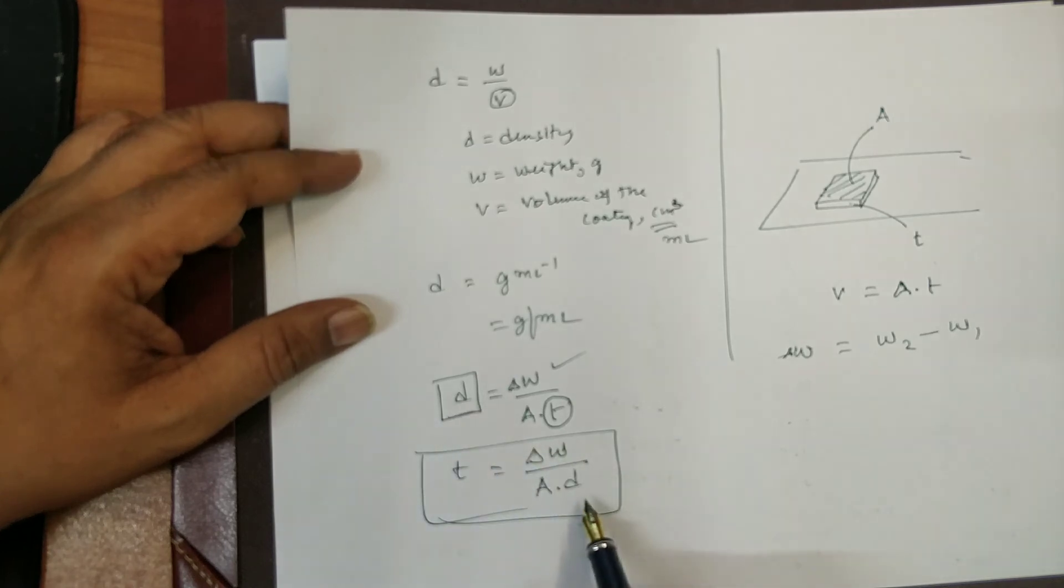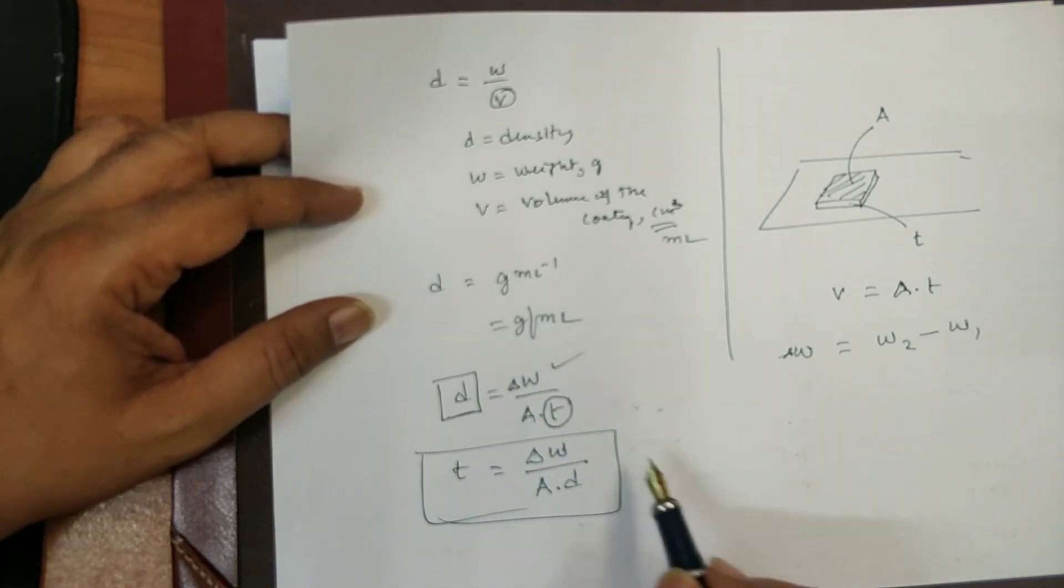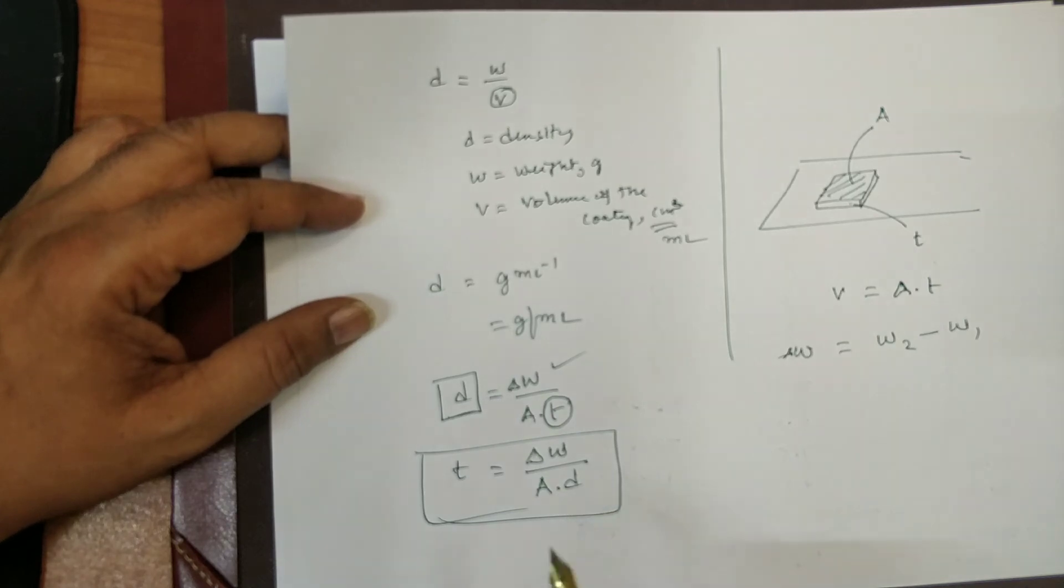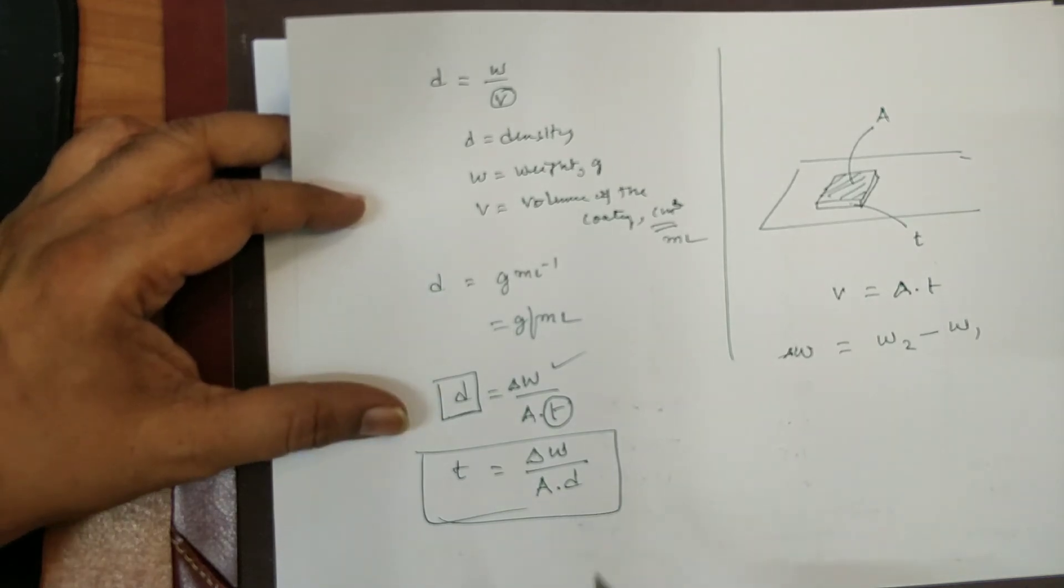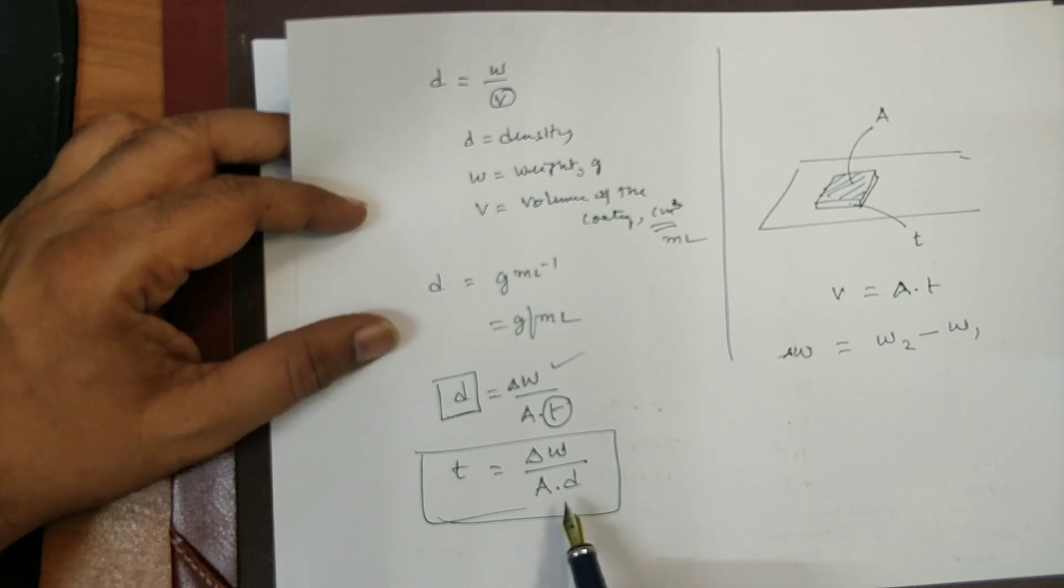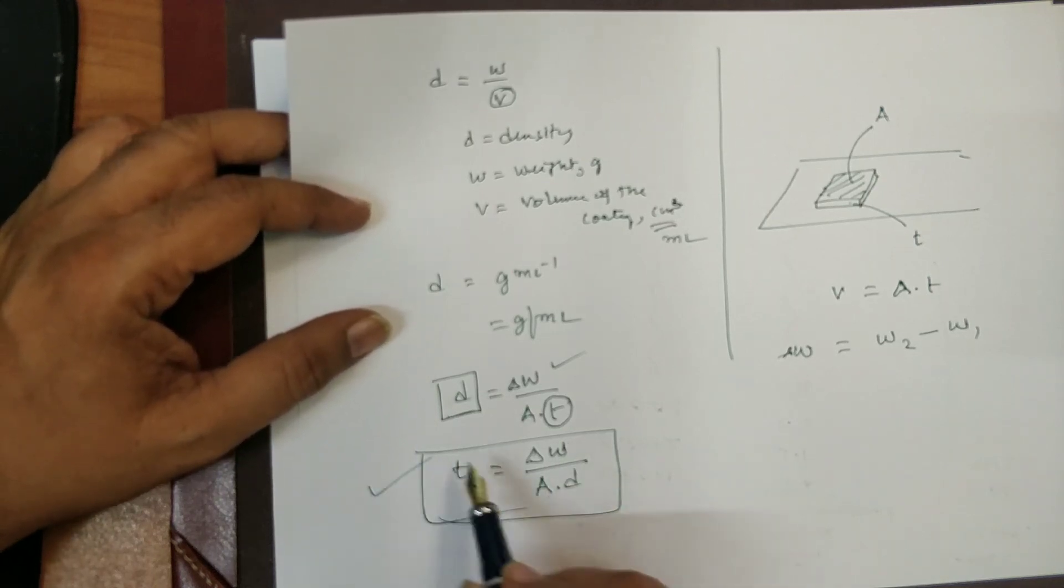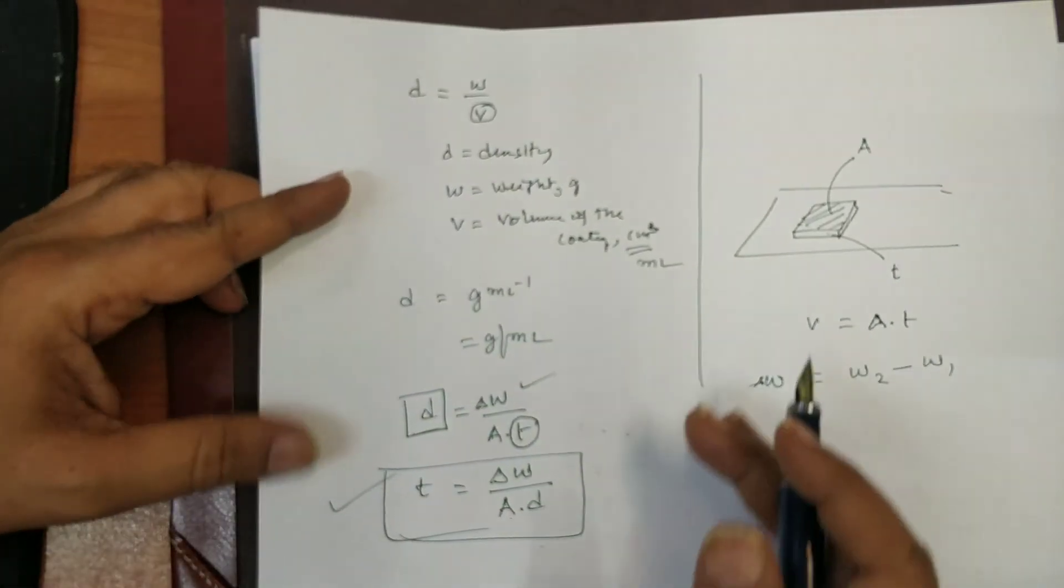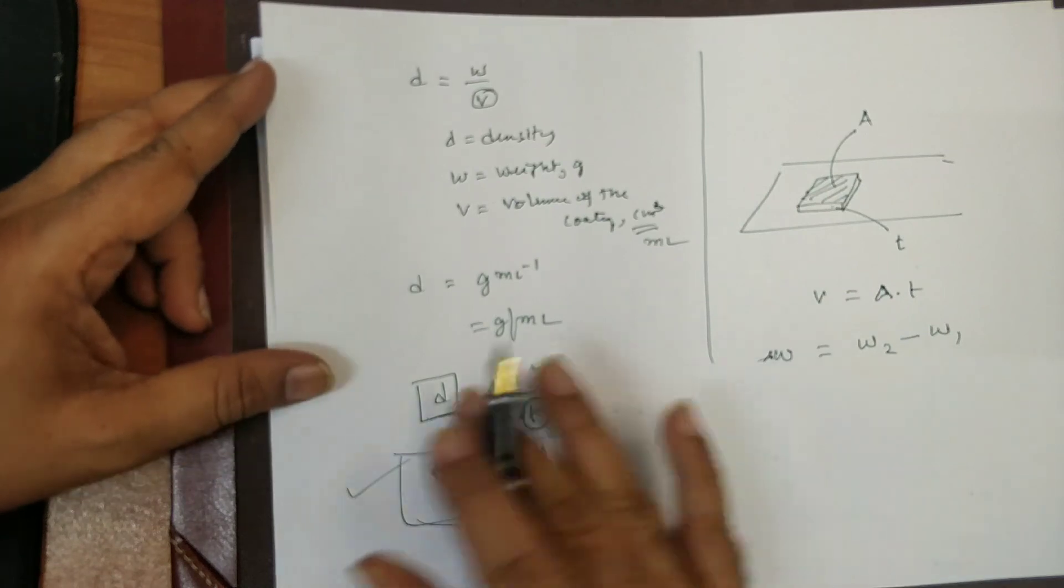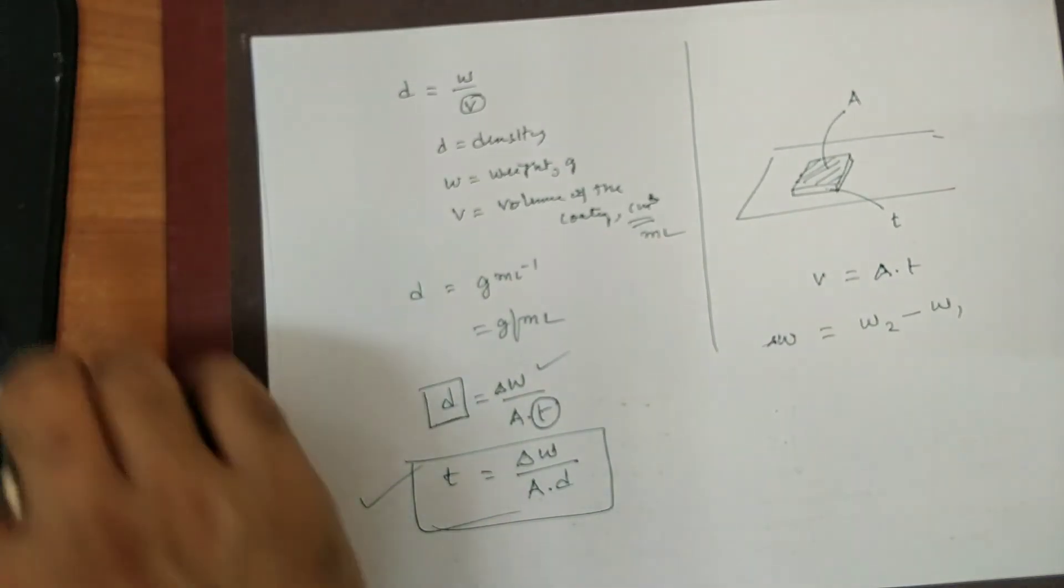T is equal to delta W divided by area into the density. So, density. I already found out with the known value. Where from I have found out the, what you call the density. And the known density. Area. And the coating weight difference. I can calculate the thickness of the layer also. So, in this way, you can experimentally determine the thickness of phosphate coating. Thank you.